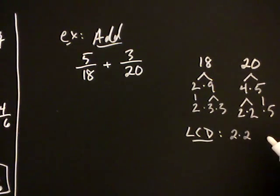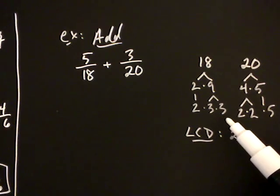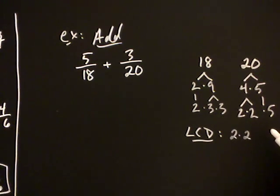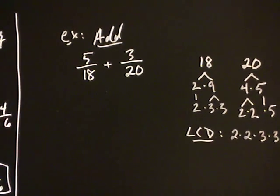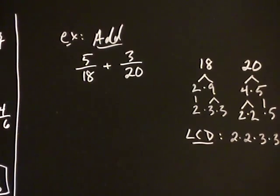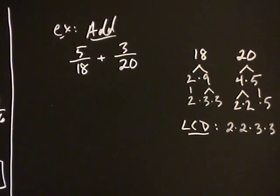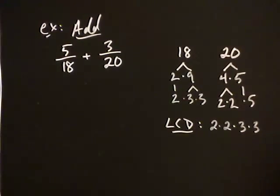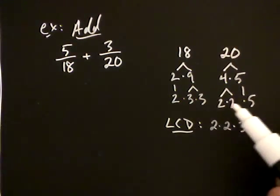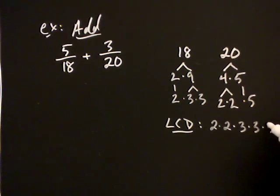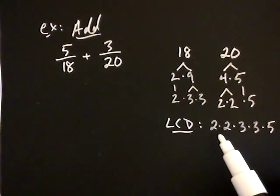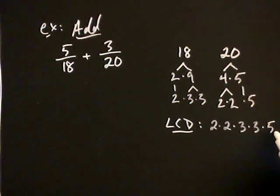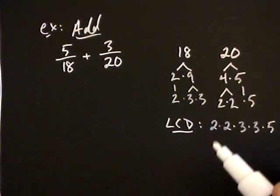Let's go on to the threes. Eighteen has two threes, and twenty has no threes, so I write down two threes. Now for the fives: twenty has one five, and eighteen has no fives, so I put in that one five. When you multiply all these numbers together — two times two times three times three times five — that number is the LCD.